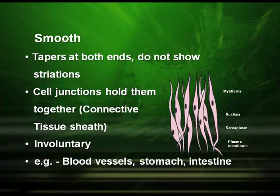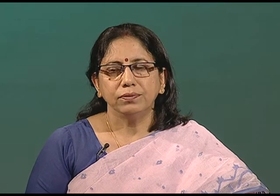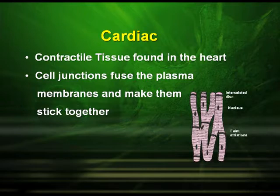Smooth muscular tissues are found in the blood vessels, stomach, as well as in the intestine. The cardiac tissues are the contractile tissues which are found in the heart. Here, the cell junctions fuse the plasma membranes and make them stick together. They have communication joints which allow the cells to contract as a unit.